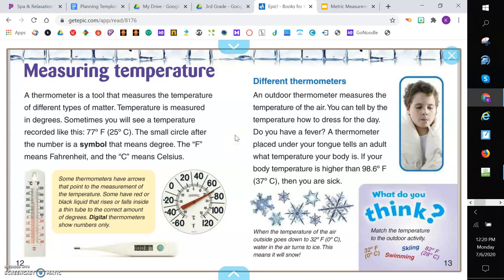Different thermometers. An outdoor thermometer measures the temperature of the air. You can tell by the temperature how to dress for the day. Do you have a fever? A thermometer placed under your tongue tells an adult what temperature your body is. If your body temperature is higher than 98.6 degrees Fahrenheit, or 37 degrees Celsius, then you are sick.